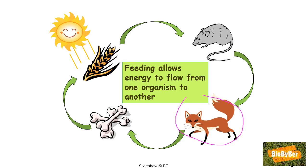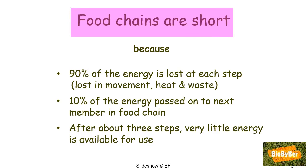When an organism dies, like Mr. Fox here, it is decayed by detritus feeders. These are organisms that feed on dead organic matter, such as earthworms and woodlice, and others such as bacteria and the fungi of decay. This then returns the nutrients to the soil. Plants can then recycle those nutrients — they act as fertilizers — turning them into chemical energy once again.